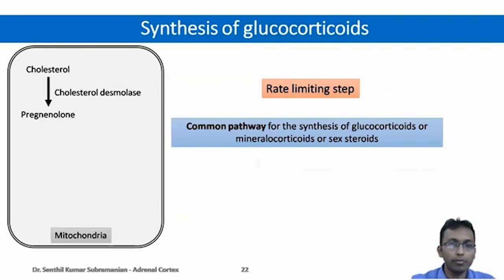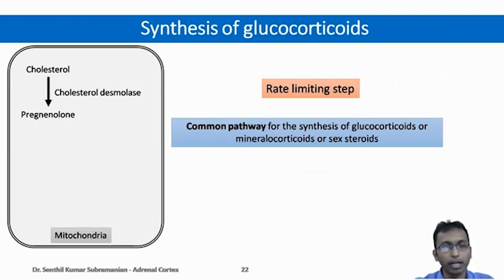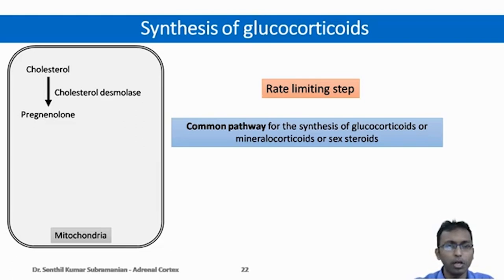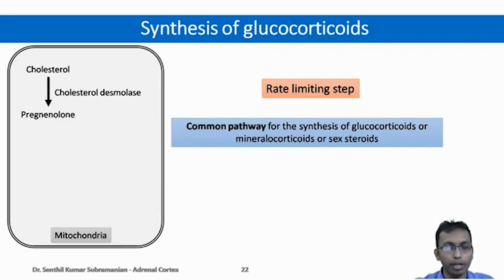Moving on to the synthesis of glucocorticoids. The cholesterol that has entered the mitochondria is acted upon by cholesterol desmolase, the side chain cleavage enzyme, which converts cholesterol to pregnenolone. This is the common step for the synthesis of glucocorticoids, mineralocorticoids, or sex steroids in any one of the three layers of the adrenal cortex. This is considered to be the rate-limiting step in the synthesis of glucocorticoids.